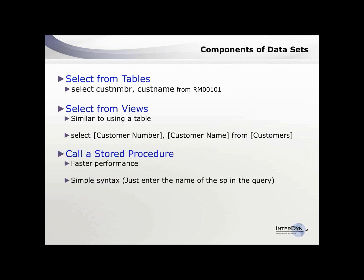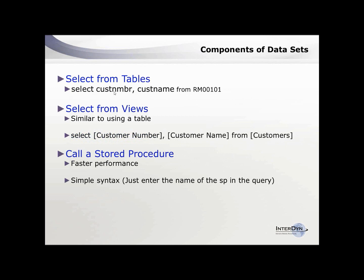As a recap: we select from tables — for example, selecting customer number from the Receivable Management 101 table. That's a glimpse at what GP data looks like from the back end. If we do views, it's similar to using the tables, but we ask for specific information and save it into a view. And the stored procedure is even faster — we just use the name of the stored procedure inside the query and you're good to go.